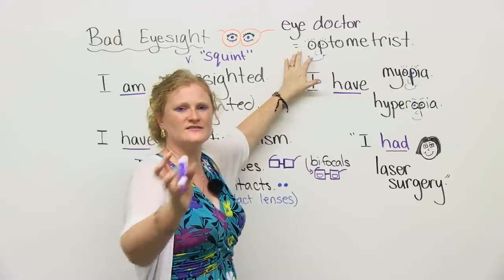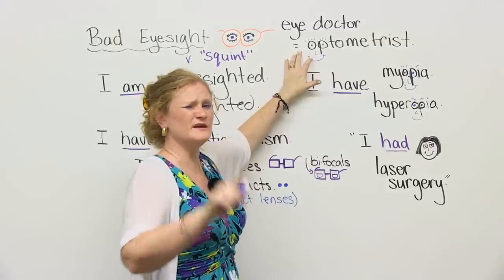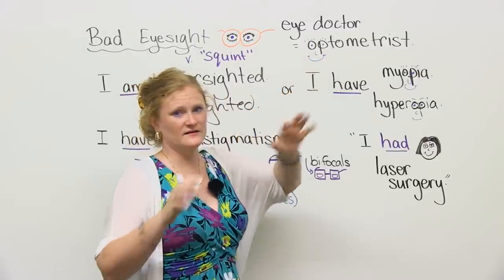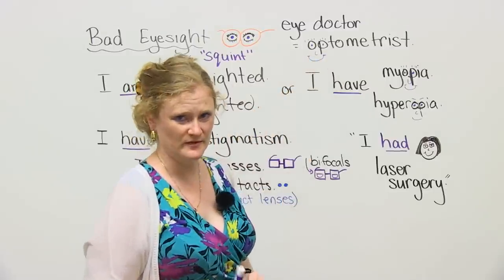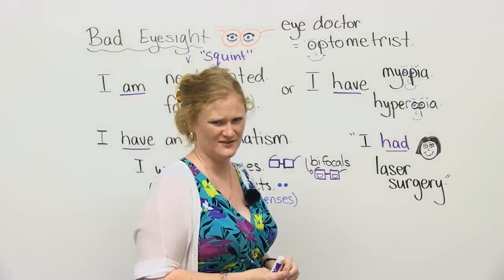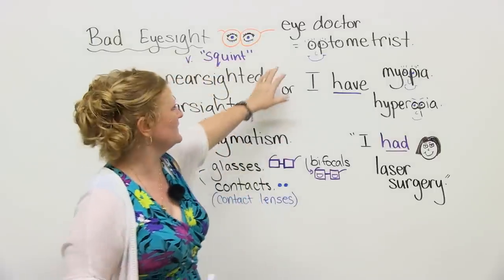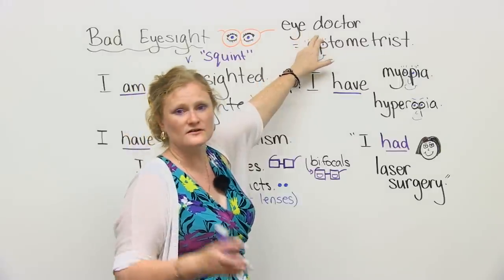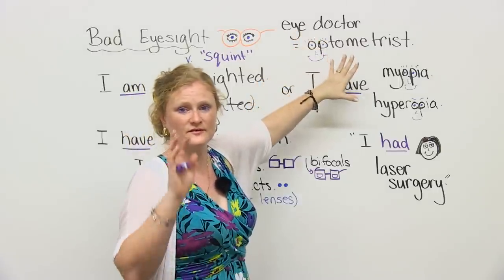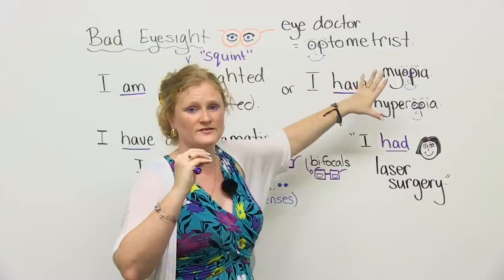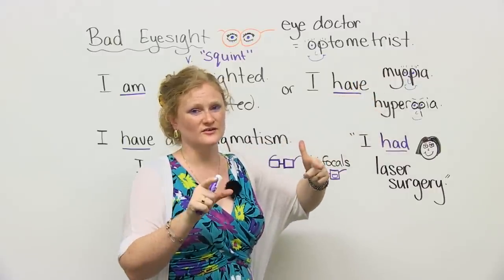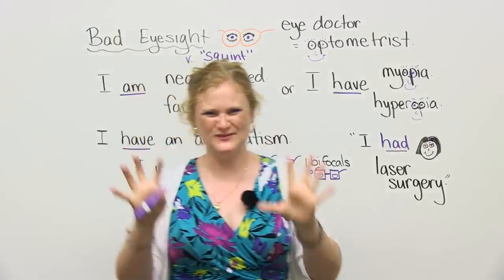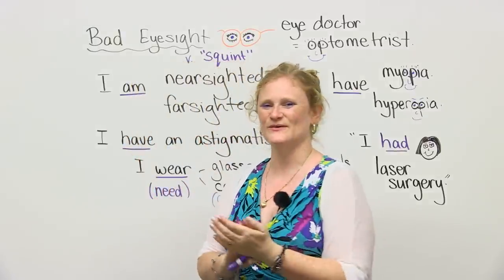If you speak a Latin-based language, maybe you use the same word. Opto means eye, so an eye doctor in the proper form is optometrist. If you have a problem with your eyes, you have to go to an eye doctor. They will get lots of money from you, do lots of tests, and then you get to wear glasses.